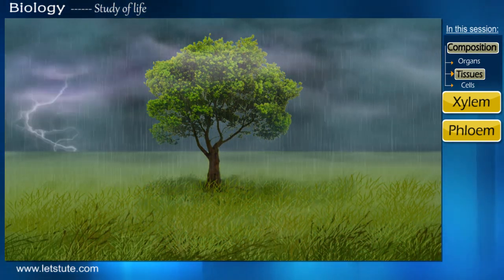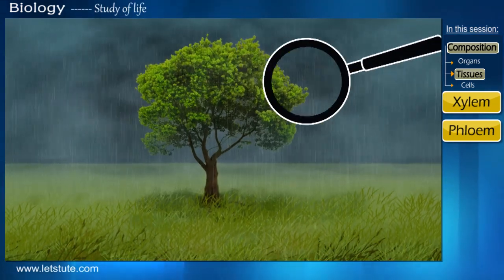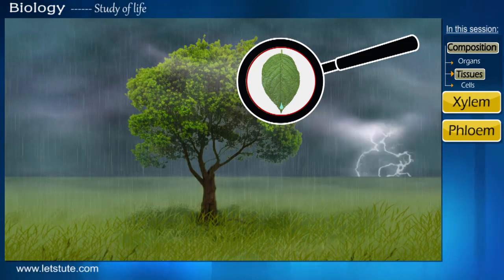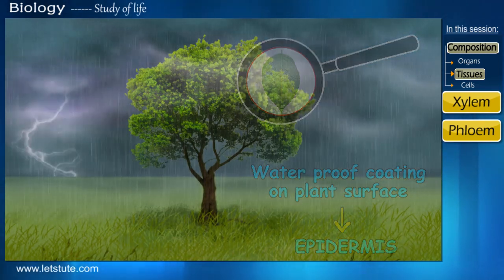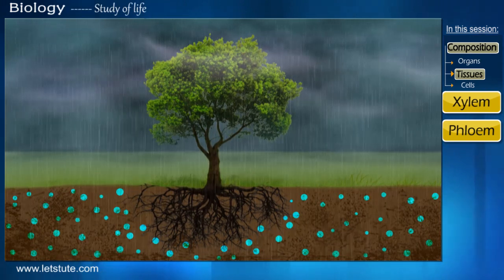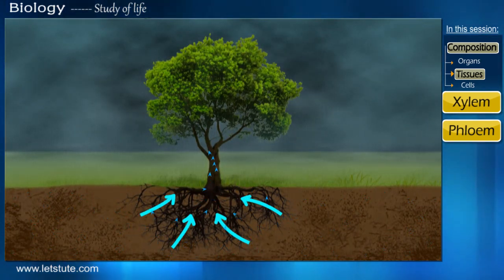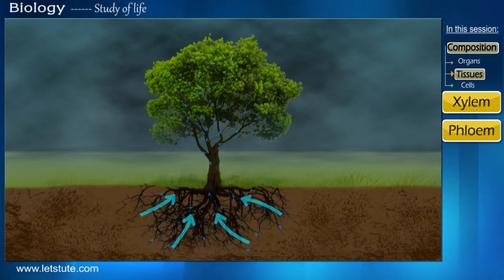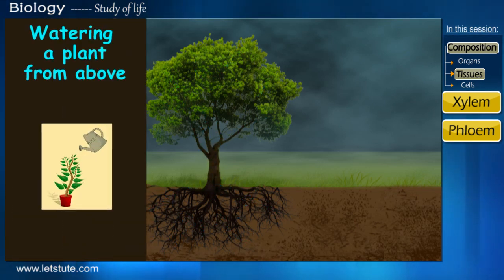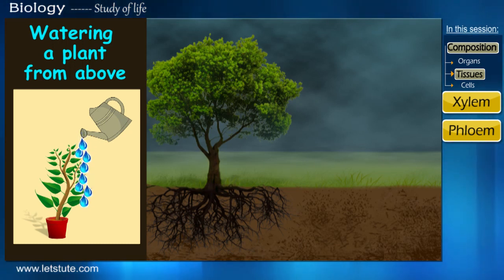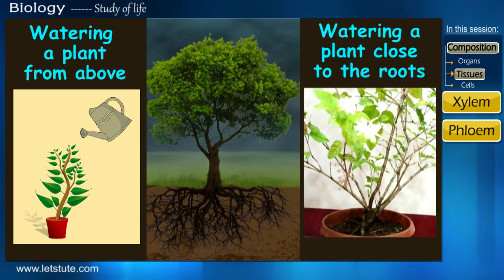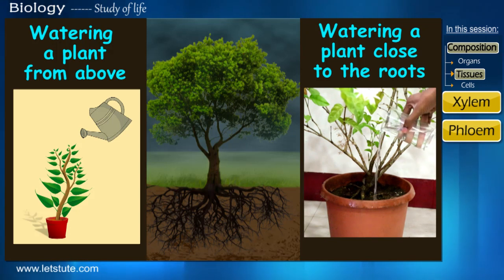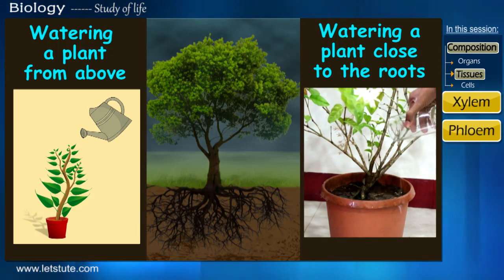We have all seen rainwater that falls on the plant. Now this water will not be absorbed by the plant, as the plant has a waterproof coating on its entire surface called the epidermis. So the water that falls on the ground is absorbed by the roots of the plant and then supplied to all its parts. Many times people water their house plants by pouring water on top of the plant, but this doesn't fulfill the plant's need for water. We must water the plant close to the roots to help reduce water wastage.